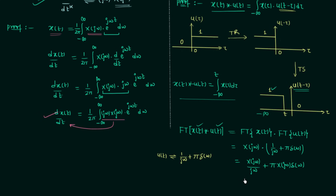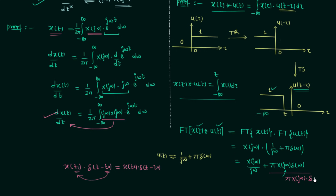We have almost obtained the property, but we still need X(0). For that, we use an important property of the impulse signal: if a signal x(t₁) is multiplied by δ(t−t₀), we simply replace t₁ by t₀, giving x(t₀)·δ(t−t₀). Applying this, π·X(jω)·δ(ω) becomes π·X(j·0)·δ(ω), and since ω₀=0, this equals π·X(0)·δ(ω).